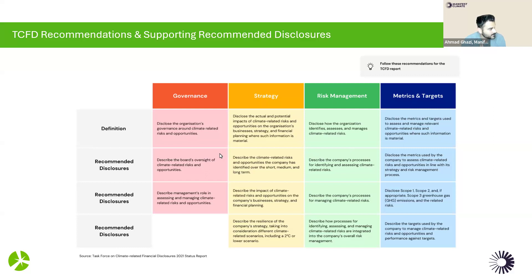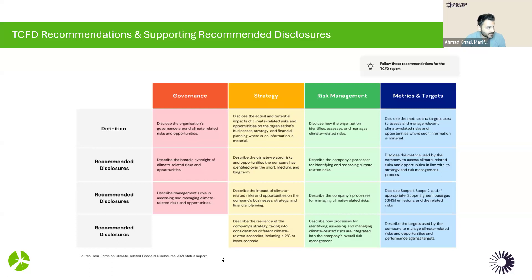Governance has two different recommendations, and all the other pillars have three recommendations. TCFD — the Task Force on Climate-Related Financial Disclosures — was established by the Financial Stability Board. The whole point of this framework is to allow organizations to disclose climate-related risks that can be used by companies, banks, and investors to provide information to stakeholders. It was meant to improve transparency and accountability on climate-related risks and opportunities.